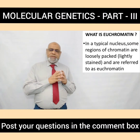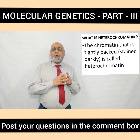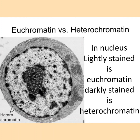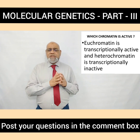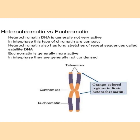Euchromatin refers to loosely packed, lightly stained regions of the chromatin in a typical nucleus. Heterochromatin is the chromatin that is tightly packed and stains darkly. The nucleus shows lightly stained regions called euchromatin and darkly stained regions called heterochromatin. Euchromatin is transcriptionally active and heterochromatin is transcriptionally inactive. Heterochromatin DNA is generally not very active; in interphase, this chromatin is compact and has long stretches of repeat sequences called satellite DNA.